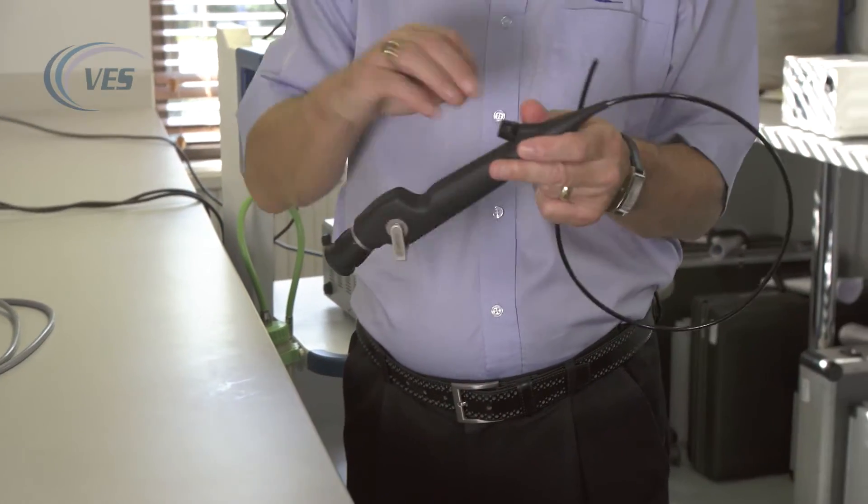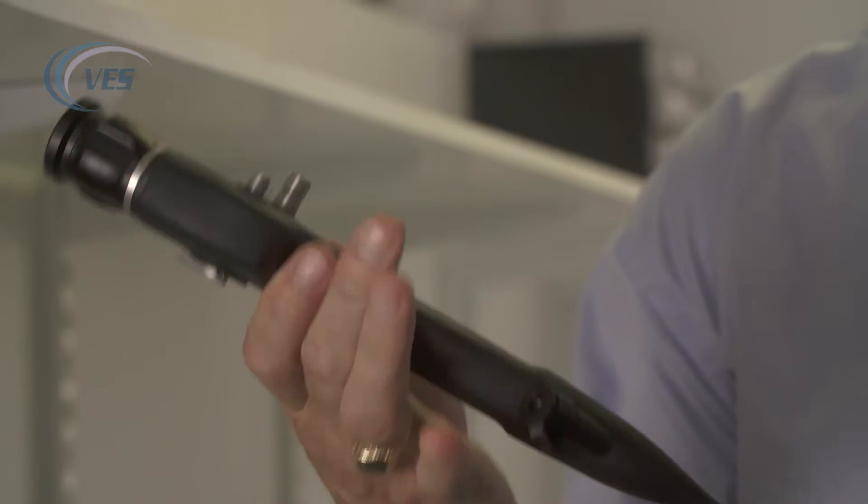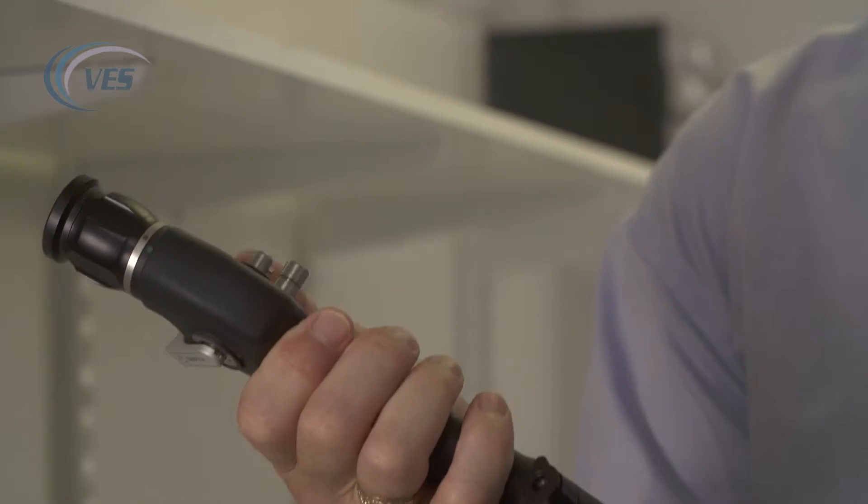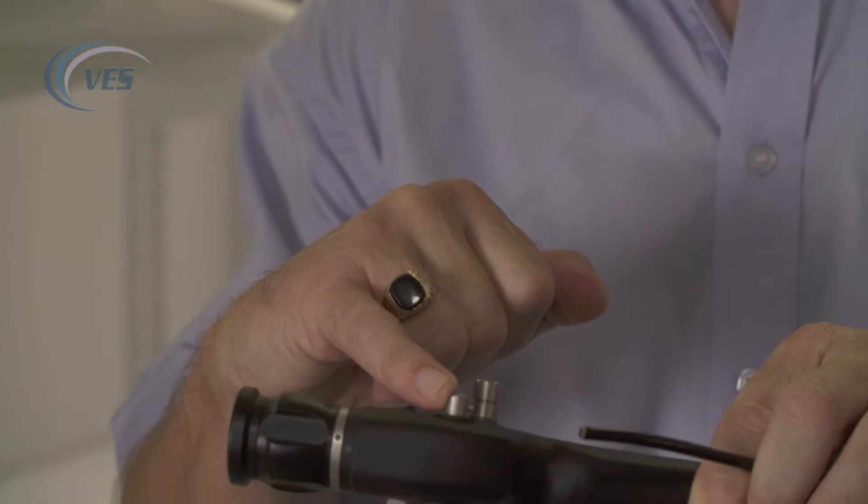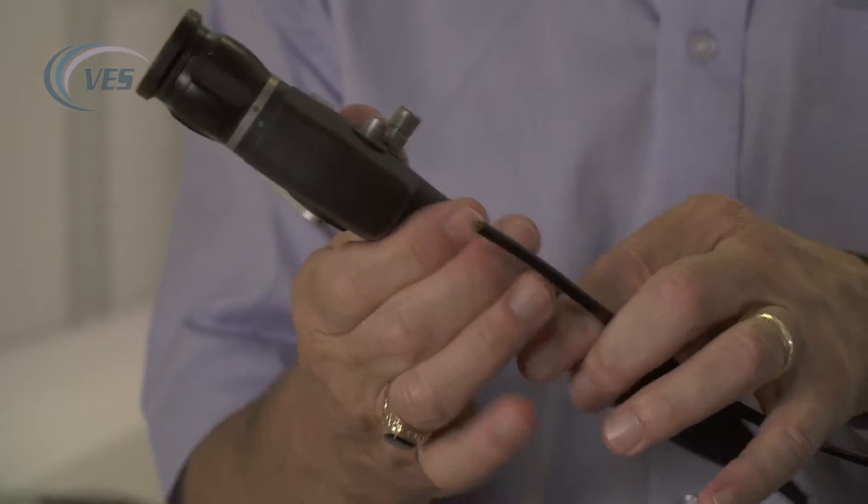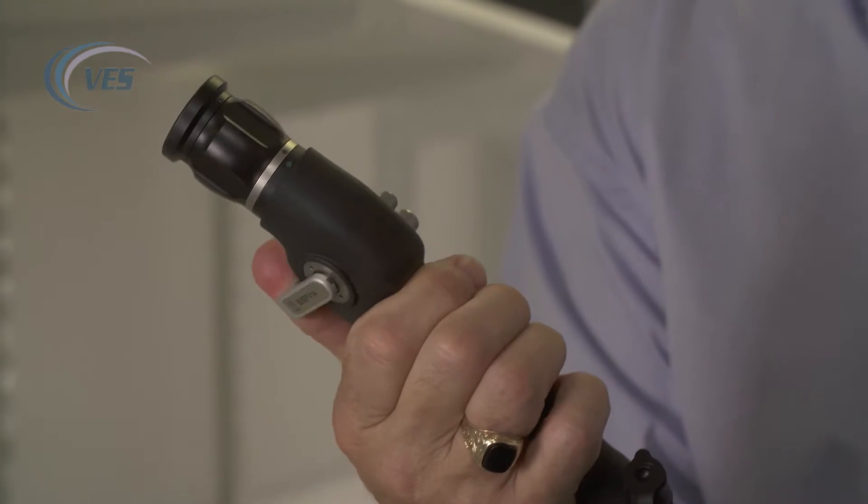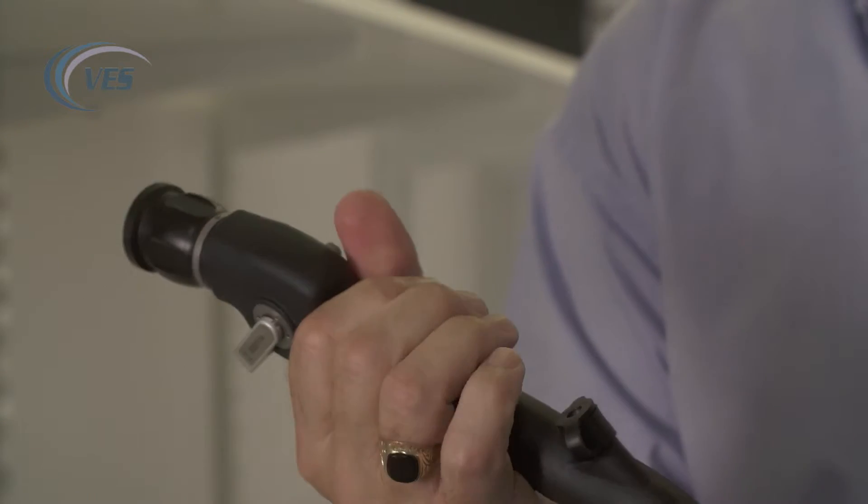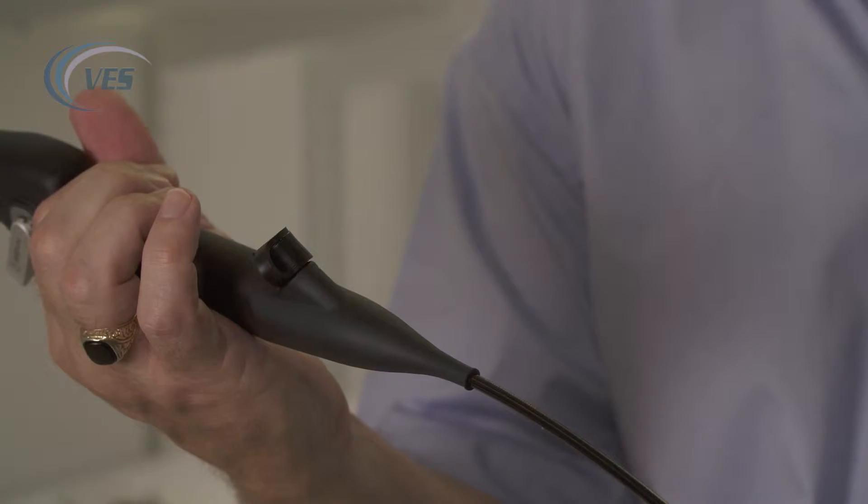So here we have the bronchoscope, and the functions of the bronchoscope are as follows. Here you have your control body, the eyepiece, the leak tester post, the light guide post, and the controls for moving the distal tip on the end of the scope. And here we have the biopsy port for putting through your cleaning brushes and your biopsy forceps.